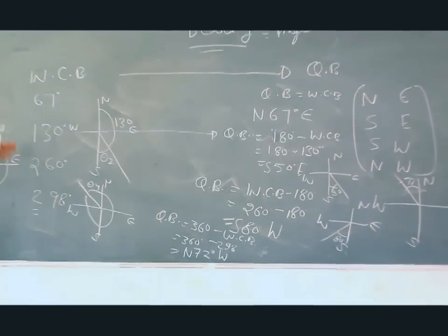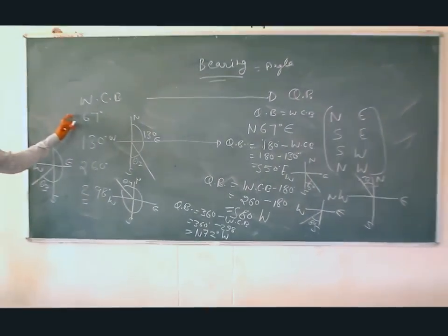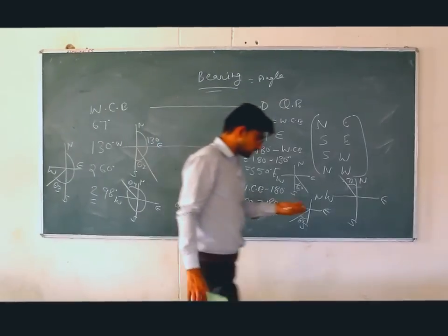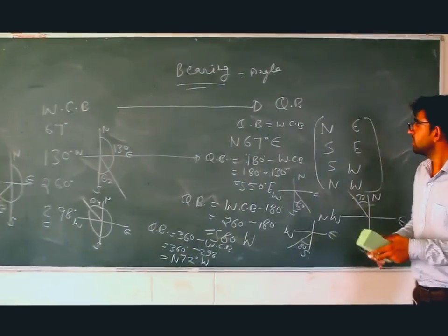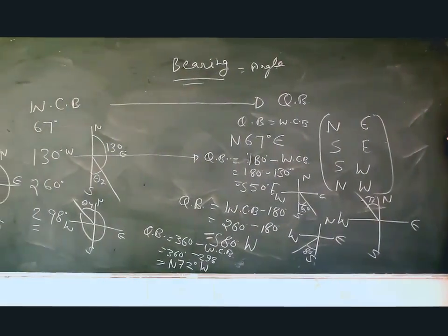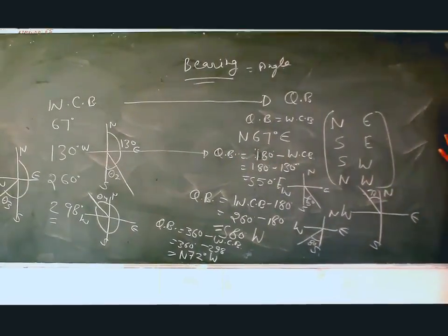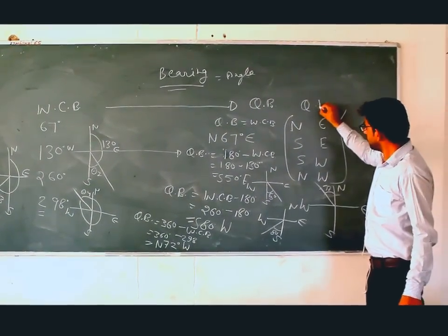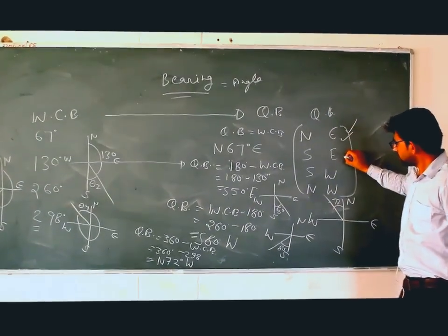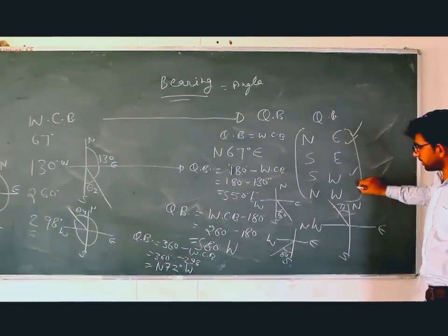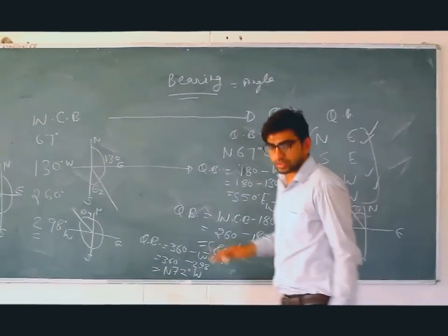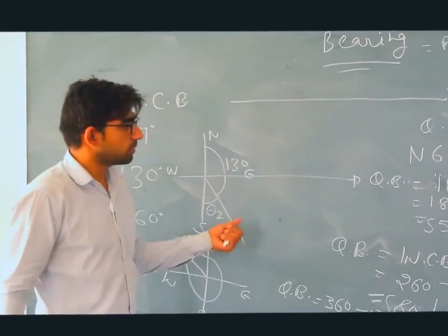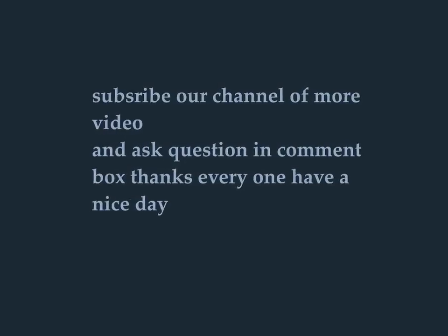Finally, we can see how to convert WCB to QB and QB to WCB. These numericals come up 3 to 4 times in exams. You can identify which quadrant an angle is in: first (NE), second (SE), third (SW), or fourth (NW). In QB, the notation always uses N, E, SE, SW, or NW. If you have any questions or problems on this topic, write them in the comment box and we will answer them.